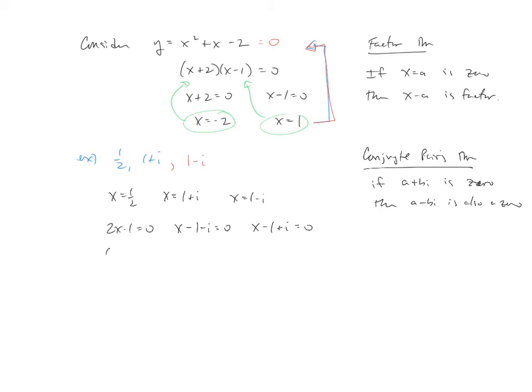Now we'll take these and multiply. The 2x minus one, the x minus one minus i, and the x minus one plus i, still set equal to zero. Now when we multiply this out, it looks a lot worse than it is. Now I'm actually going to group like this,